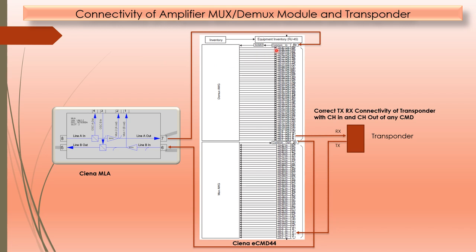Before going into details about the isolator, we need to know the connectivity of the amplifier, MUX/DMUX module, and transponder. Taking the example of the Ciena MLA and Ciena C extended CMD44: the Line A Out port of the Ciena amplifier is connected to the common input of the CMD44, and the common output is connected to Line B In of the Ciena MLA. One transponder is used — transponder RX is connected to channel 5 out, and transponder TX is connected to channel 5 in. This is the correct TX/RX connectivity.